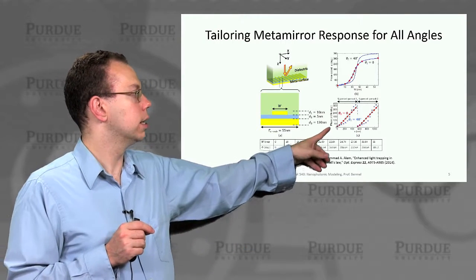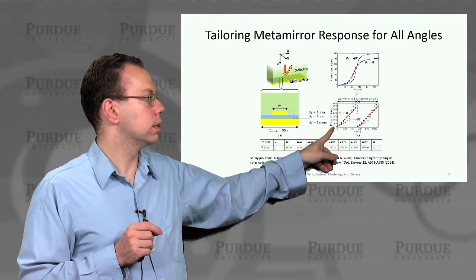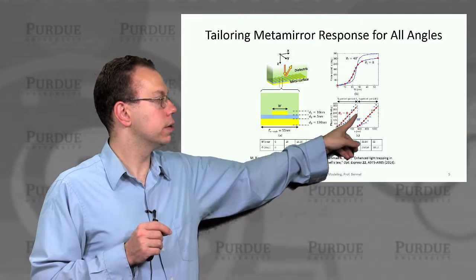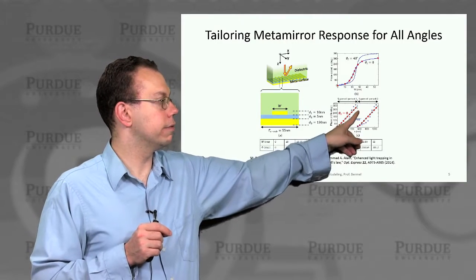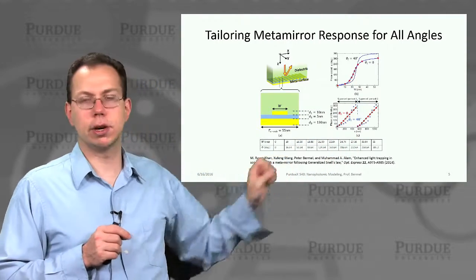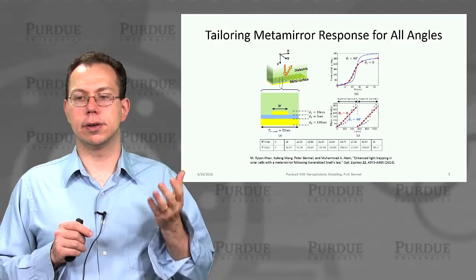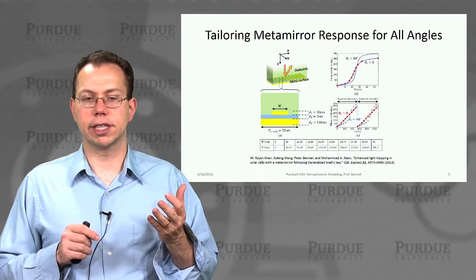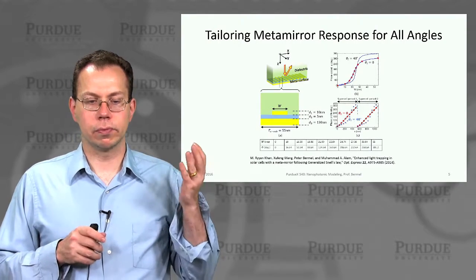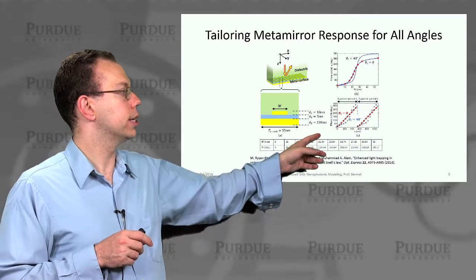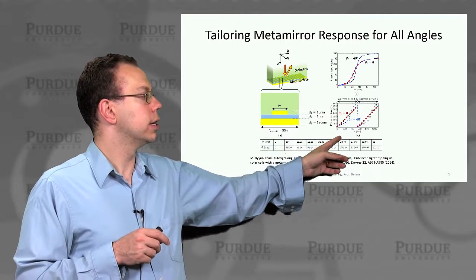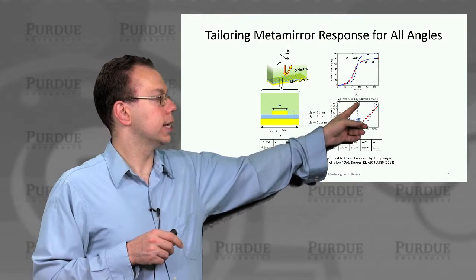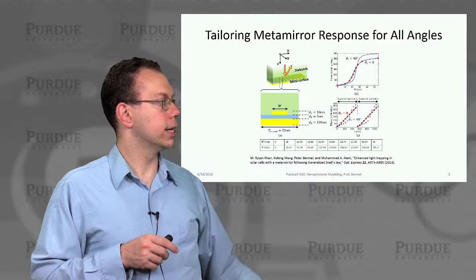At an incident angle of zero, you have a perfectly flat phase front, which is what you ideally expect — in other words, the gradient of phi is a fixed value. But on the other hand, you could potentially have this phase factor go up like this and then back down like this.